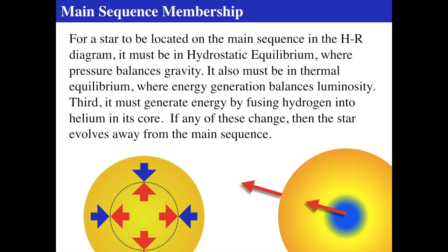So what makes up a main sequence star? We'll utilize what we learned about the Sun. Two things must exist: the star has to be in hydrostatic equilibrium, meaning pressure is balancing gravity. The diagram shows blue arrows representing the gravitational pressure pushing in on the core, and red arrows showing the outward pressure from the hot gas — so gravity pulls in and pressure pushes out.